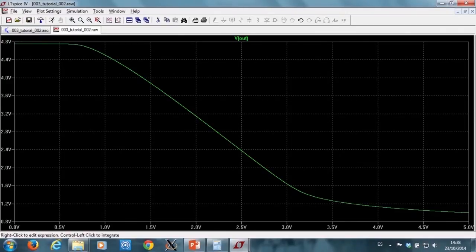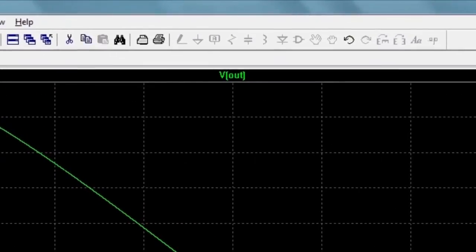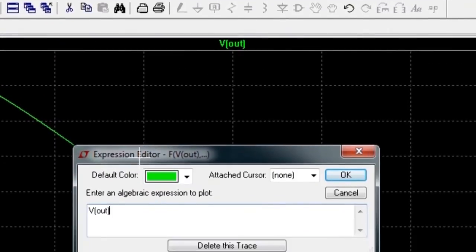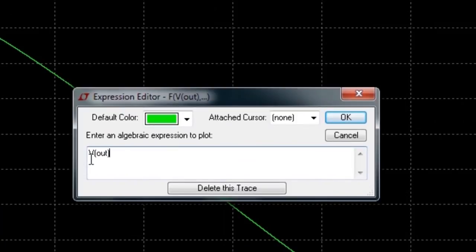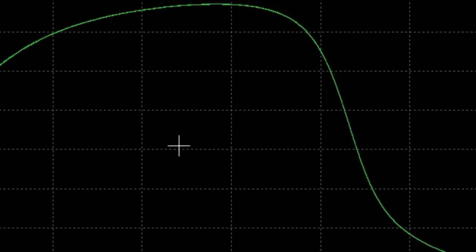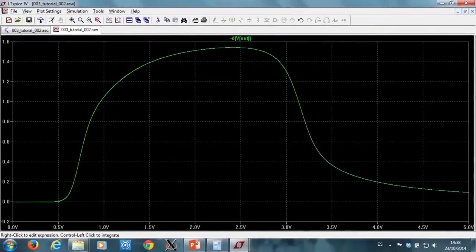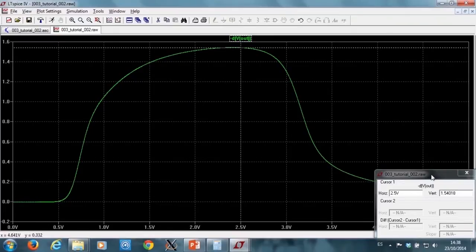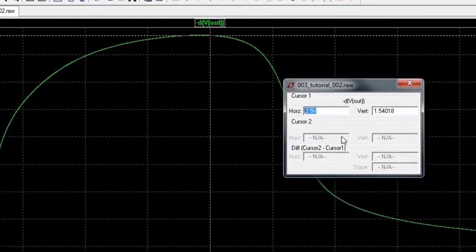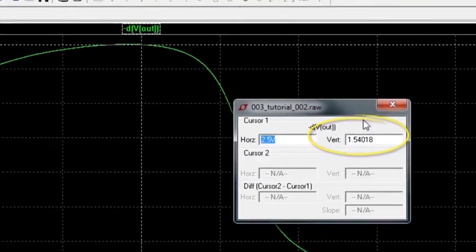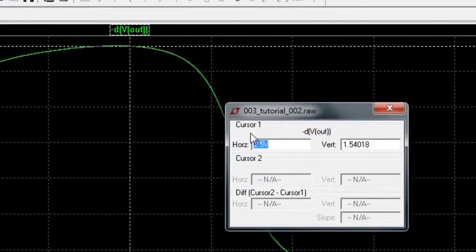To compute this slope, I simply plot the derivative of this curve. So I write minus D, that stands for derivative, of D out, my function. I can see that at my bias point, at 2.5 volts, the voltage gain is 1.54.